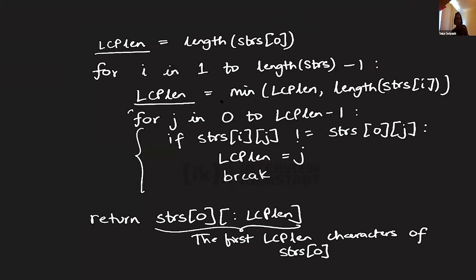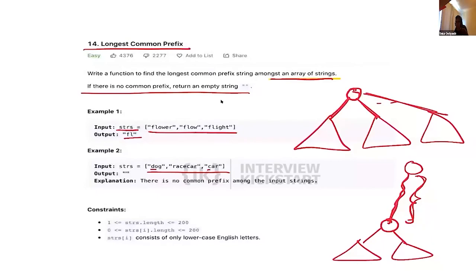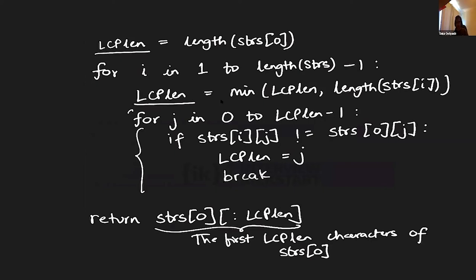Onkar asks: is it guaranteed that all strings have a common prefix? No — it could be empty. For example, if you have 'flower', 'flow', 'flight', and 'apple', the answer is the empty string. In that case, the LCP length turns out to be zero, and taking the first zero characters of the first string gives an empty string. You can also short circuit when you see zero, and add those optimizations after the basic version runs correctly.